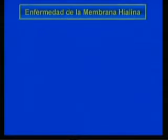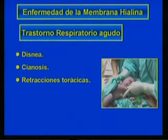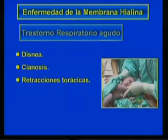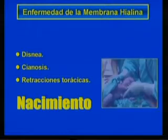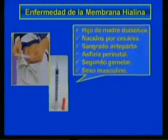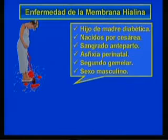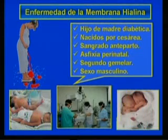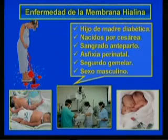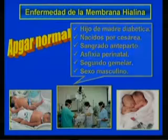You should know this is an acute respiratory disorder presenting with increasing dyspnea accompanied by cyanosis and thoracic retractions. It can begin from birth or appear shortly after in preterm neonates. It is more frequent in infants of diabetic mothers, those born by cesarean section, when there is antepartum bleeding or perinatal asphyxia, in the second twin, and has a higher frequency in male newborns. Neonates can have a normal Apgar score and begin showing respiratory signs minutes or hours after birth.